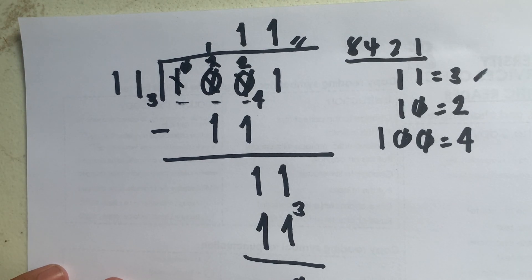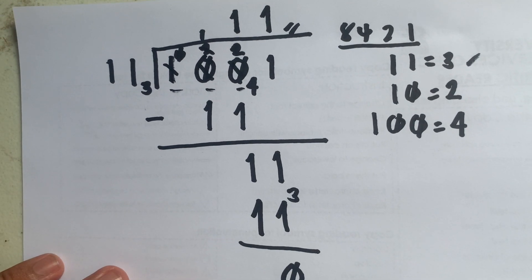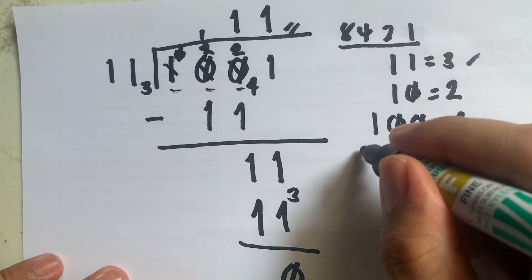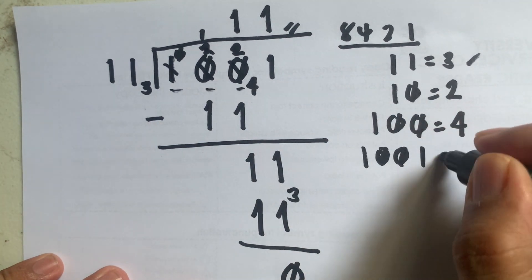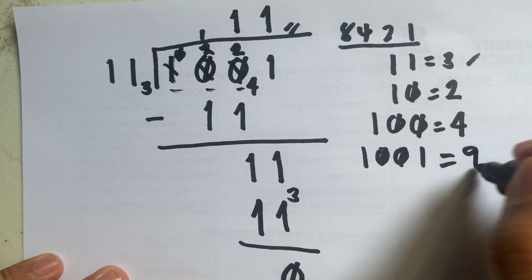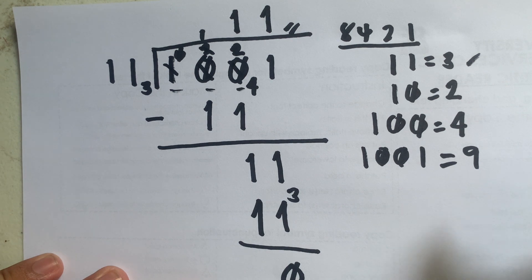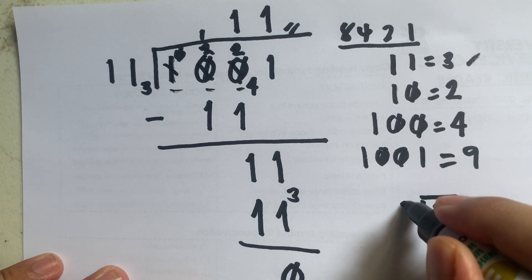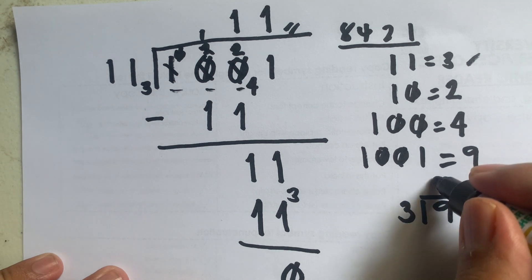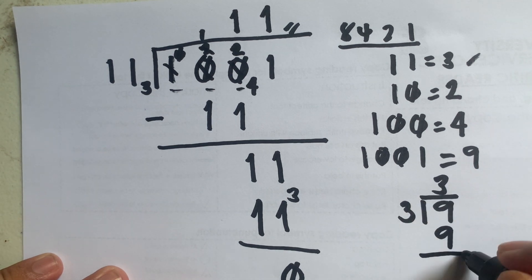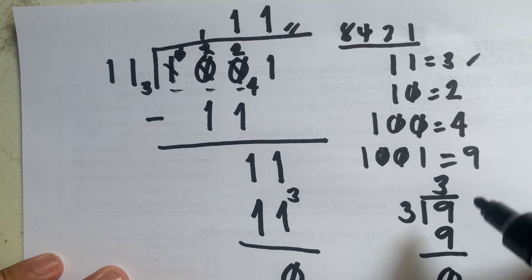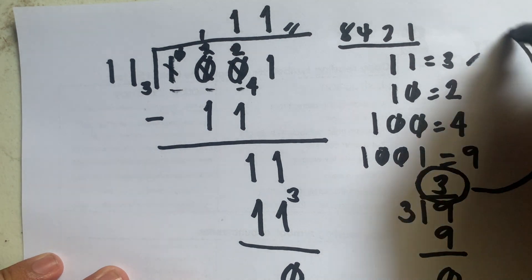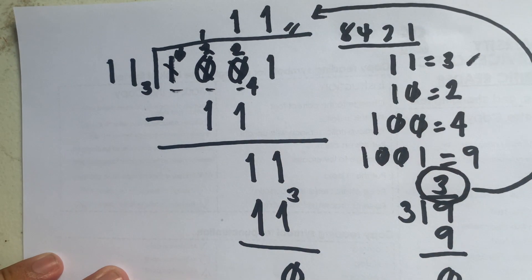To check: 1001 in decimal is 9, and 11 is 3. So we are dividing 9 by 3, which gives exactly 3 with remainder 0. The answer 3 in binary is 11, which matches our result. Our answer is correct.